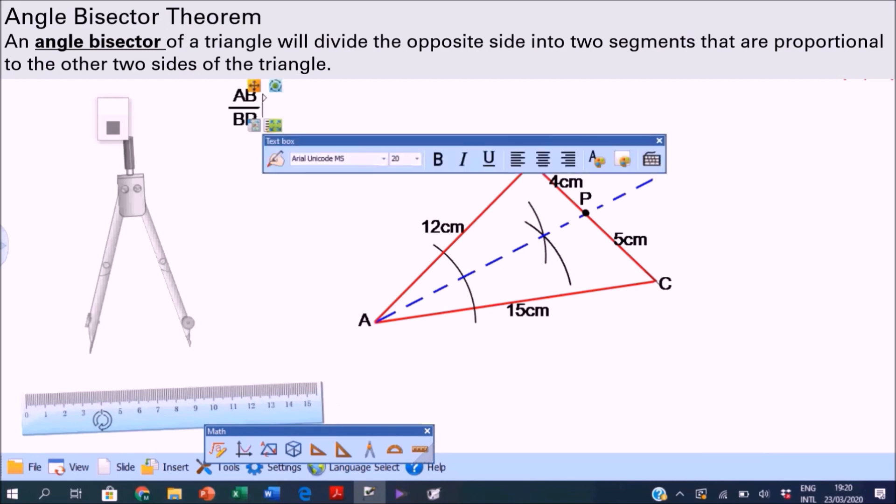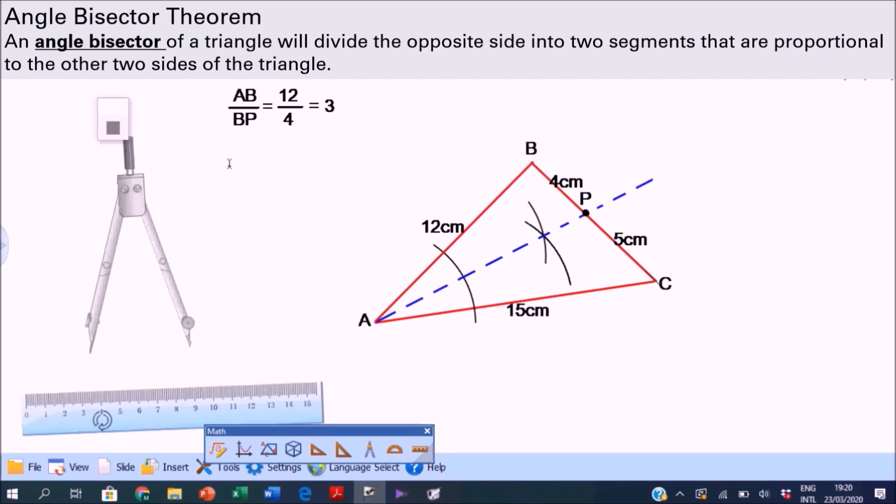Now watch carefully. We'll get the ratio of AB to BP, which is 12 over 4, that's 3. How about AC to CP? 15 over 5, that is also 3. So what does this tell us? The ratio of the segments and the other two sides are equal. Do you think this is true for any triangle or any angle that we bisect?